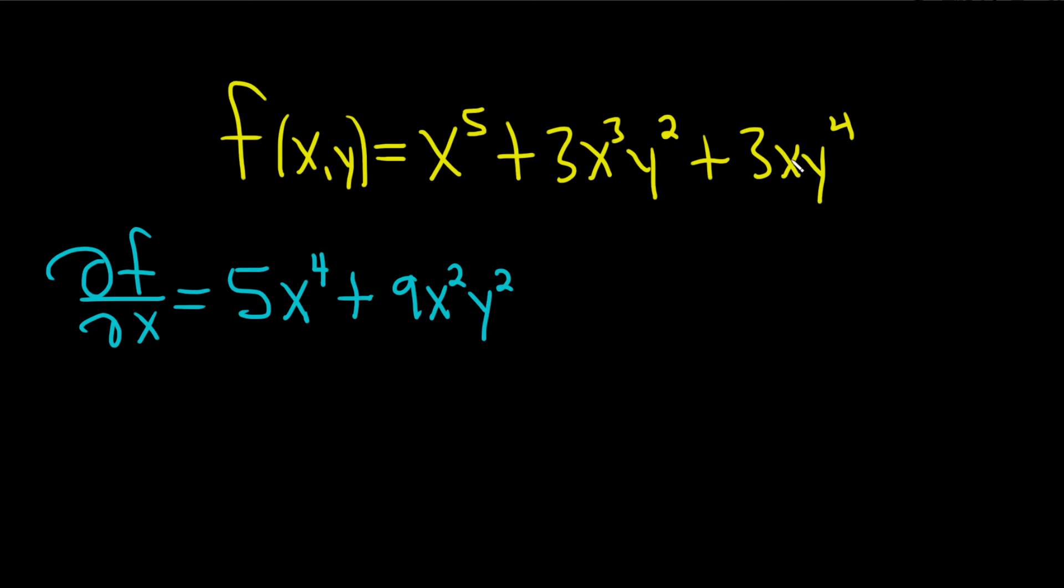And then here, same thing, we're differentiating x. So we'll just get 3y to the fourth because the derivative of x is 1. So 3y to the fourth. So that would be the partial with respect to x. Let's do the partial with respect to y.